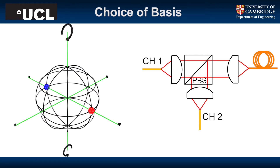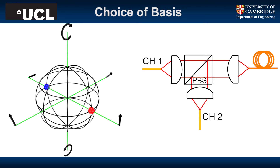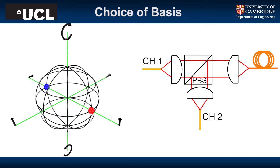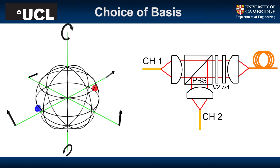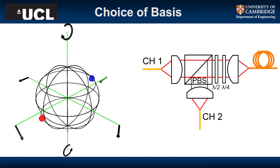The first thing you do with a polarization multiplexing system, even if you don't really think about it, is you decide upon your polarization basis. Typically that would just be horizontally and vertically polarized light, but you could choose any polarization basis that you want, as long as they're orthogonal — as long as they're both on opposite sides of the Poincaré sphere.